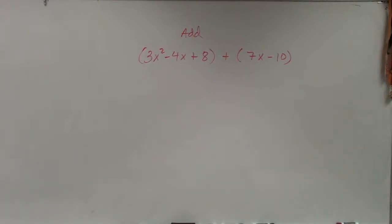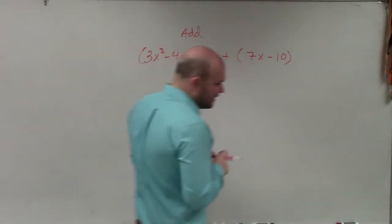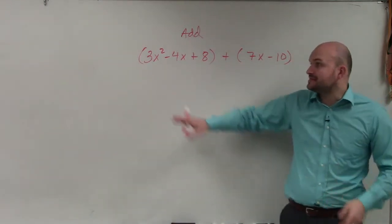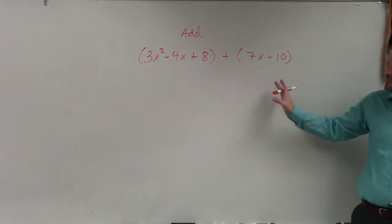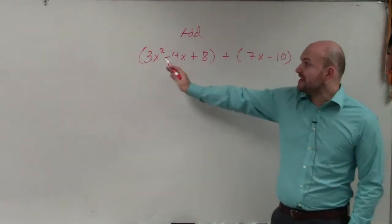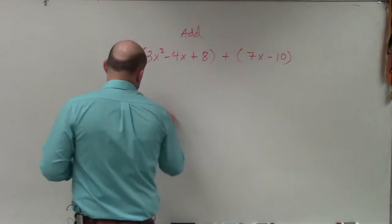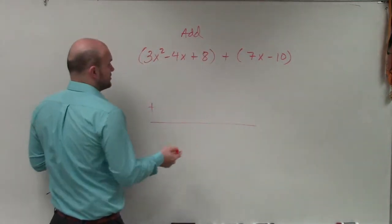Basically, ladies and gentlemen, when we are adding or subtracting, pretty much combining them, the main important thing we want to do is align our variables that have like terms. They're like terms if they have the same variable factors. So basically, what I'm going to do is what we call the vertical method, and I'm going to align these vertically.